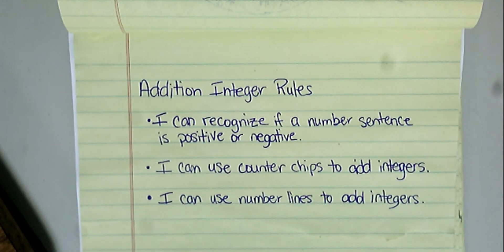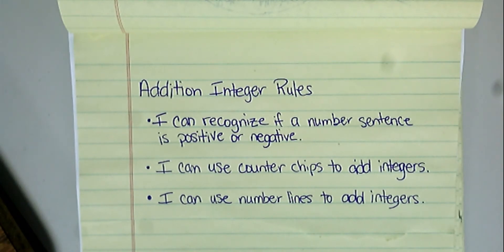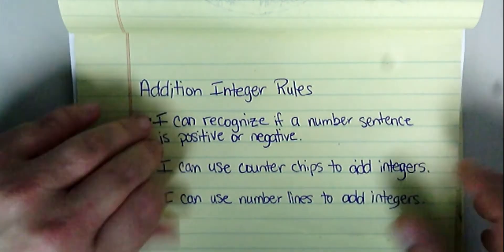We're going to start with integer addition rules. The first learning target is: I can recognize if a number sentence is positive or negative. The second learning target is: I can use counter chips to add integers. And the third learning target is: I can use number lines to add integers. In this video we will cover all three of those things, and then we will do another video over subtraction of integer rules. So let's get started.